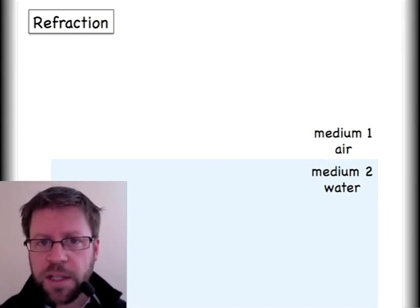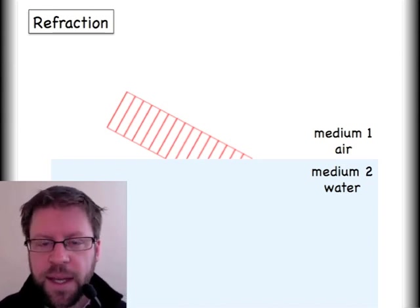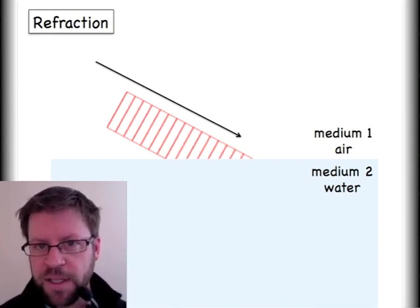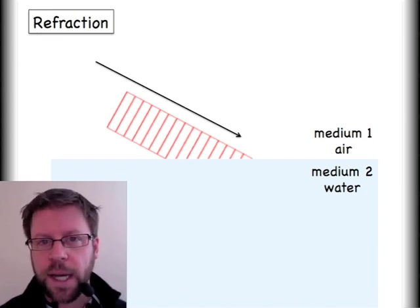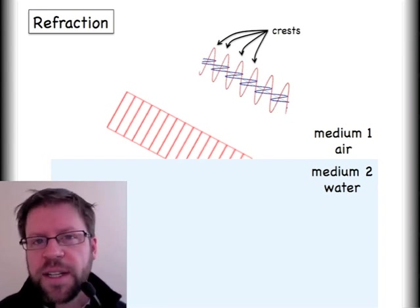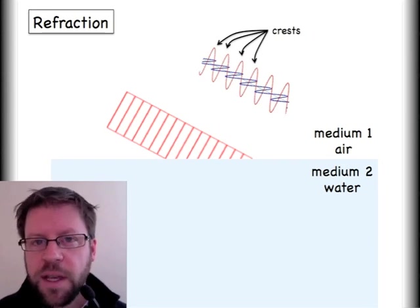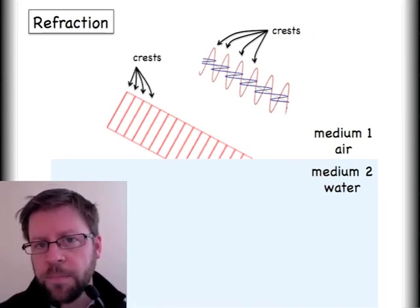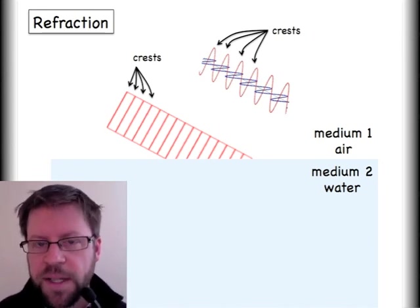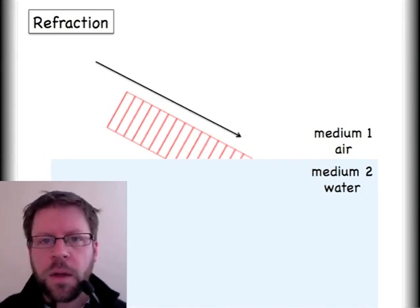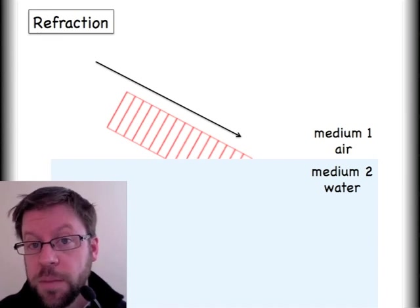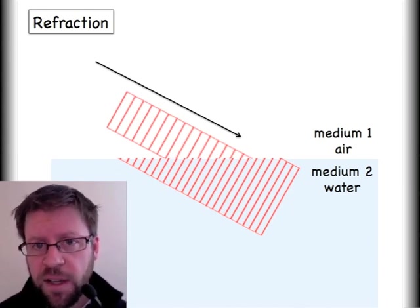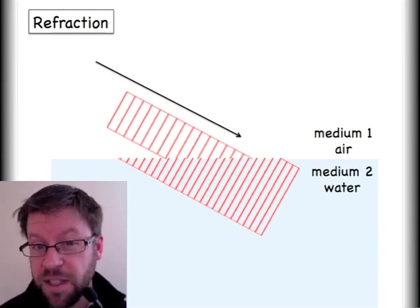Now we move to a different model for light. I have this ladder-looking thing coming in, traveling through air at an angle and about to hit a new interface — water. This is called the wavefront model. You identify where the crests are in the electromagnetic wave, and the rungs of the ladder represent those crests, the peaks of the electric part of the wave. When I move this wave into the new material at an angle, the wavelength still has to shrink because I'm now in a higher index of refraction material — the rungs of the ladder get closer together.